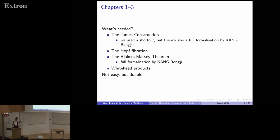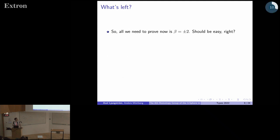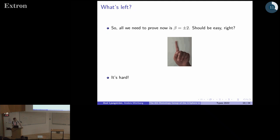You need the Hopf fibration, you need the Blakers-Massey theorem, whitehead products, yada yada. But, you know, it's not easy, but it's doable. So all we need to do now is prove that this number beta is plus or minus two. We're done because we have this equivalence. But this is not easy.